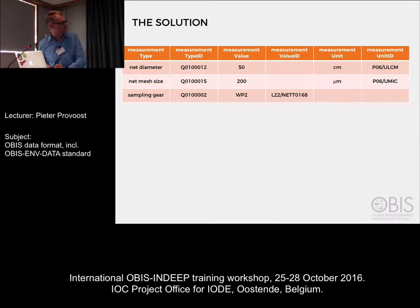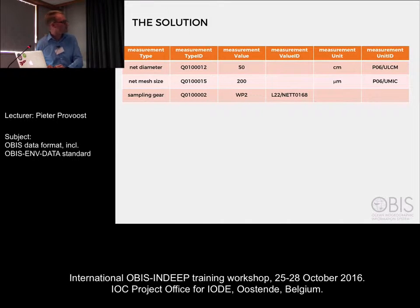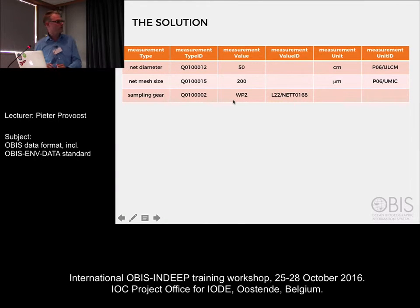As an example, here's part of a measurements table. You can have a measurement type of mesh size — this is more a fact than a measurement. There's an identifier for mesh size that you can add in measurement type ID. You put the value — say 200 micrometers — in measurement value, and the unit in measurement unit with its identifier in measurement unit ID. For sampling gear, this also has an identifier, and the value for this fact would be, in this case, a WP2 plankton net, which also has an entry in L22.